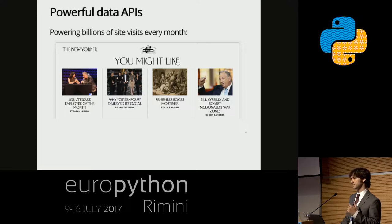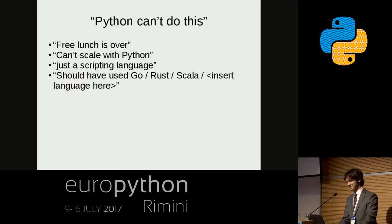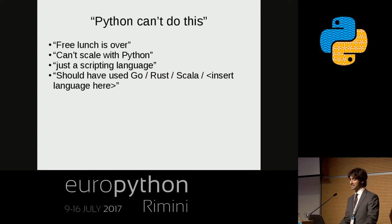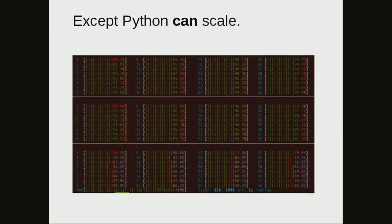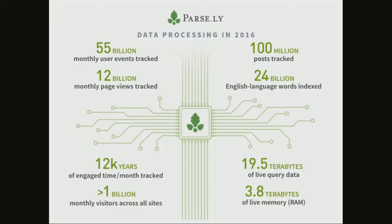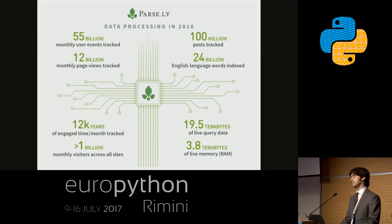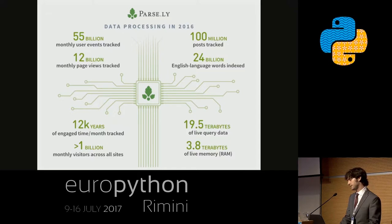A lot of times when I talk about what we do and the scale at which we do it, I hear: Python can't do this, Python doesn't scale, it's just a scripting language, you should have used Go, Rust, Scala, C, Java. Except Python can scale. That's a screenshot of HTOP running across a couple of machines with all of our cores maxed out using just a couple of Storm topologies. Just the US election day alone, we brought in like two or three billion events — all done in Python. So Python can scale, Storm can help you, and so can StreamParse.